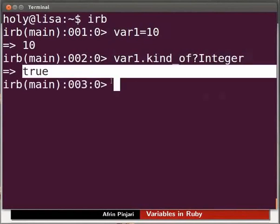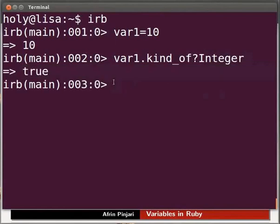In Ruby, you can dynamically change the variable type. To do so, just assign a new value to it. Let's do this by assigning a string value to variable var1. Type var1 equal to within double quotes hello and press Enter.